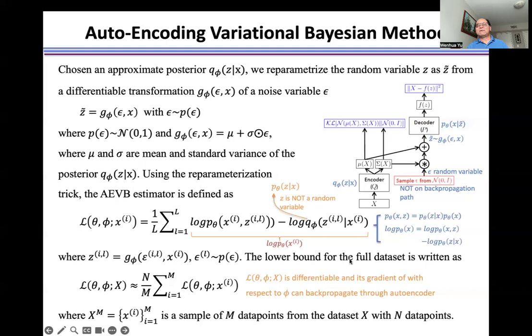The lower bound for the data set is written as the sum of the lower bound for each data point. So, we can calculate the gradient of L with respect to the variational parameters phi, and then we can use this gradient to train the autoencoder model.